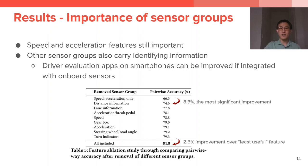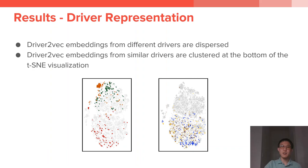In the last results slide, we compare embeddings of drivers that are distinguishable by the model, shown on the left, versus those that the model made mistakes on, shown on the right. For drivers distinguishable by Driver2Vec, their embeddings occupy different locations in the plot. For drivers that the model had difficulty with, the embeddings are all mixed in the same region, suggesting these drivers likely have similar driving styles.